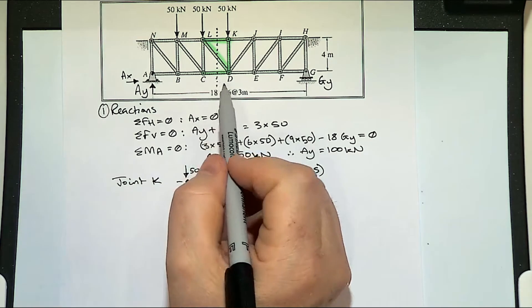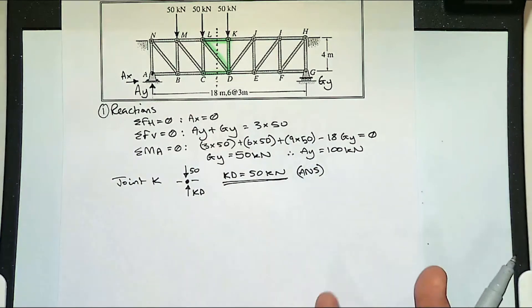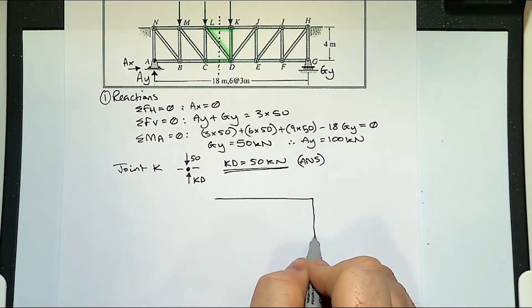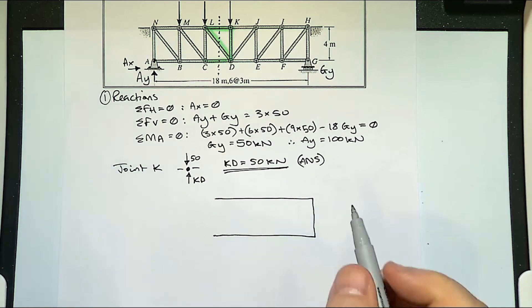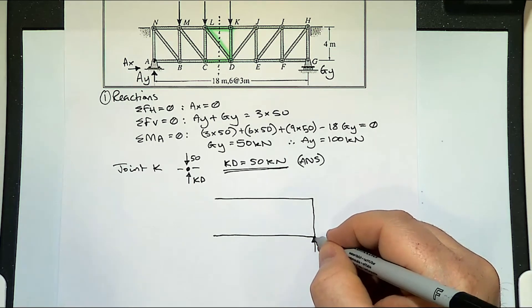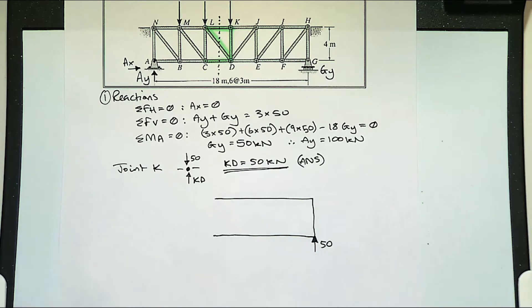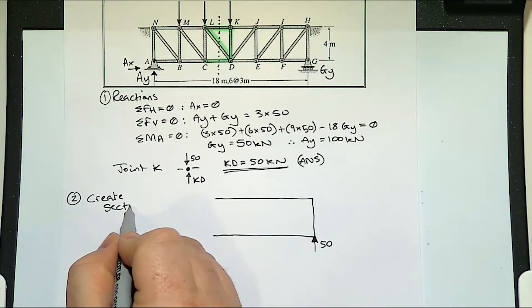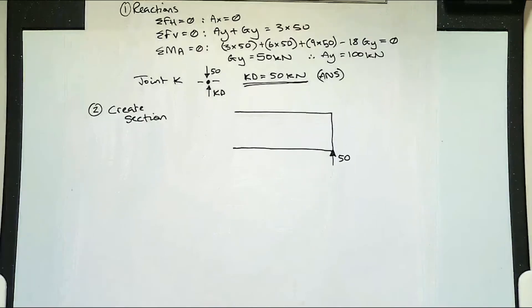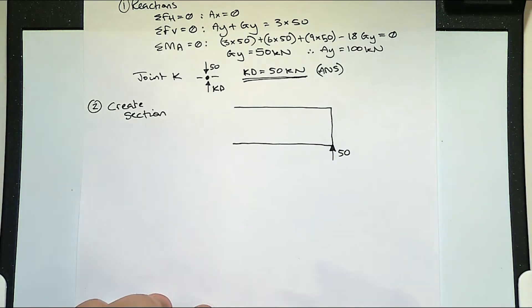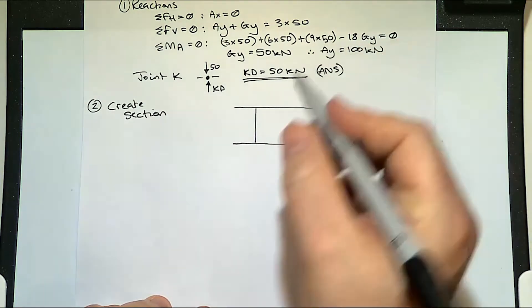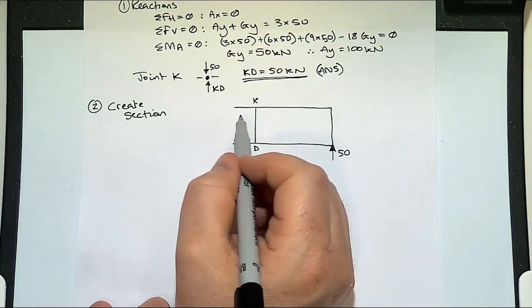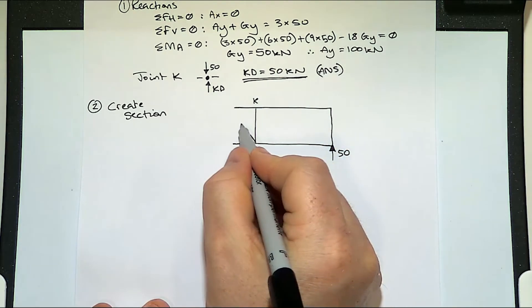So because I've sliced through these three here, I'm just going to draw out the right-hand side of the truss again. So I'm creating a section now. There's my KD. Wherever you slice through a member, you have to turn that into a force.